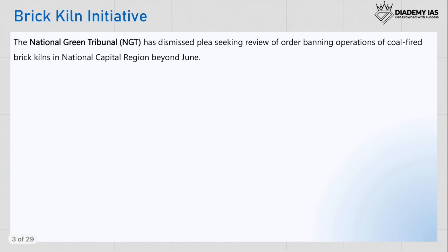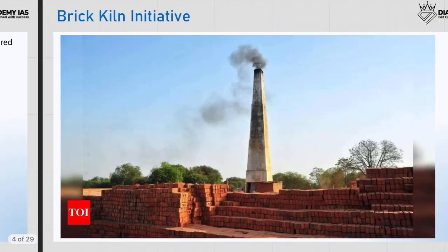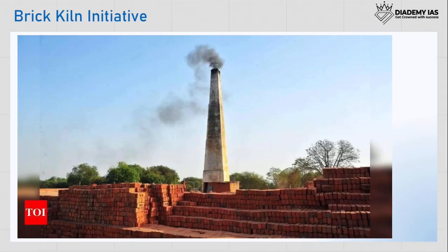The first topic is the Brickland Initiative. Because of rising pollution in the capital region of Delhi, the NGT ordered a ban on coal-fired bricklands in the National Capital Region beyond June. The bricklands which are being fired using coal are now banned. A brickland is basically the place where bricks are stacked and burned — initially bricks are made of mud, then stacked and burned using coal, as you can see in this picture.